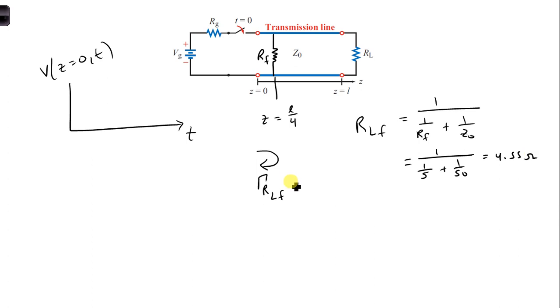Now we can obtain the reflection coefficient for the Rf resistor in parallel with Z naught. So we'll have Rlf minus Z naught over Rlf plus Z naught. Plug in our numbers, 4.55 and 50 for Z naught, and we get minus 0.83.